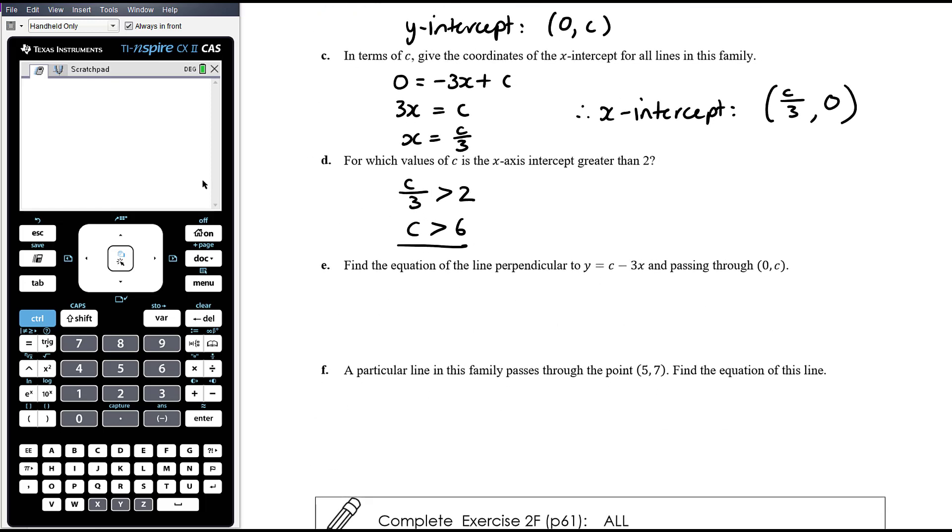So find the equation of the line perpendicular to y equals c minus 3x and passing through 0c. If it's perpendicular to c minus 3x, the original gradient is negative 3. So the gradient, the perpendicular gradient, is going with positive 1 third. And it has to go through the point 0c, which is a y-intercept. So that means that we've got gradient and y-intercept. And so therefore, the equation would be 1 third x plus c. Perpendicular to this line, but also going through the same y-intercept.